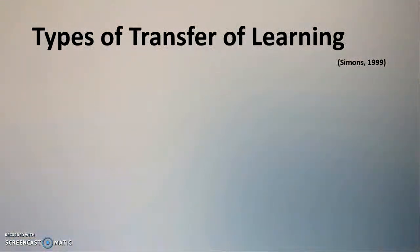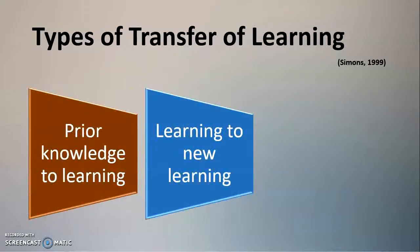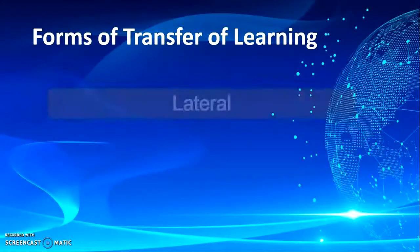According to Simmons in 1999, there are three types of transfer of learning. First is prior knowledge to learning — the learner uses prior knowledge to learn anything new. Second is learning to new learning — previously acquired learning facilitates or hinders new learning. Third is learning to application — if someone has learned theories, principles, or basic concepts and is able to apply those in practical situations, that is called learning to application.